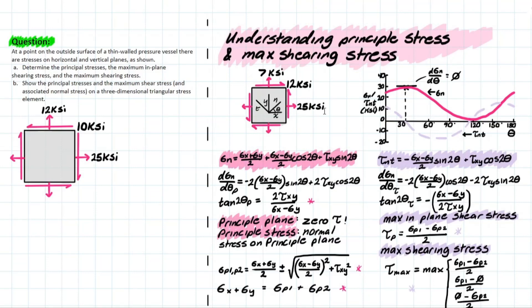Let's imagine we're looking at a typical stress element as we've done before. We know that we can take planes or sections of this element based on angle theta from x to n, and derive for the normal stress and the shear stress that will be built onto that inclined plane based on these formulas here. We've talked about that in the previous video.